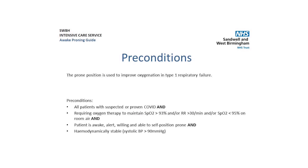The patient must be awake, alert, willing and able to self-position. The patient must be hemodynamically stable. In addition you must explain to the patient what the position is and the intended objective of improving breathing and avoiding escalation to ventilation. Special consideration should be given to patients with chronic respiratory disease whose normal saturations are lower than 94%. These patients must have a medical review before being put in the awake prone position, which should include specific targets for their oxygen saturations.